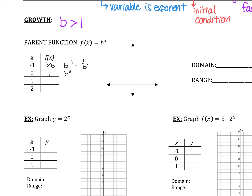If I do b to the 1st power, what do I get? It's itself — 2 to the 1st is 2, 3 to the 1st is 3. So b to the 1st is just b. These are the most important points that we have, and you need to know and understand this.